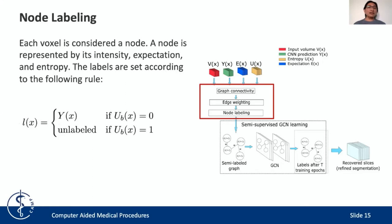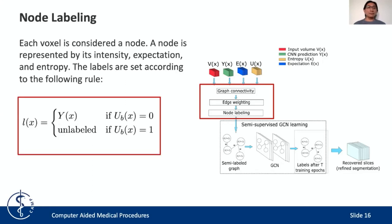The labels are set according to the following rule. We use the binarized entropy UB. If UB is equal to zero, that means the particular voxel has low uncertainty, and we keep the original prediction of the CNN for these cases. If the binarized uncertainty is one, that means that for that particular voxel we have very high uncertainty, and in these cases we mark the node as unlabeled.